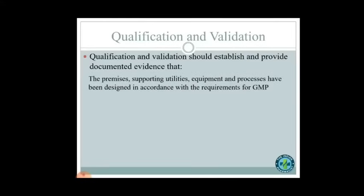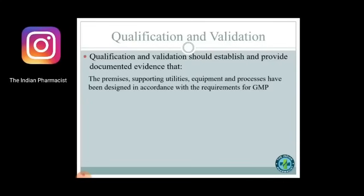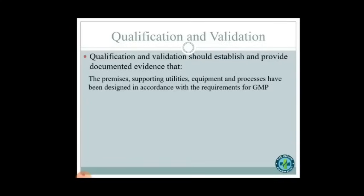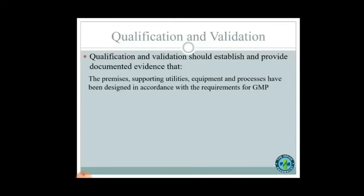Qualification and validation should establish and provide documented evidence that the premises, supporting utilities, equipment, and processes have been designed in accordance with GMP requirements. This includes the facility, utilities such as air, water, compressed air, steam, and nitrogen, as well as various types of equipment used in manufacturing — all designed with no deviation from GMP requirements and no risk to the product.